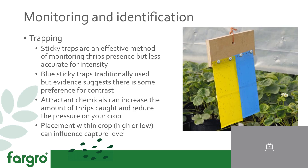Another way to monitor thrips, once you know they're in your crop — or even preventively — is using sticky traps. They're an effective method of monitoring thrips, but can be a little less accurate for intensity. Blue sticky traps have traditionally been used, but there is evidence now suggesting that thrips actually prefer contrasting colour. As you can see on the right, a yellow sticky trap next to a blue sticky trap actually caught more thrips. You can boost attraction further using specific attractant chemicals on the market for thrips, and placement within the crop can also impact the level caught.